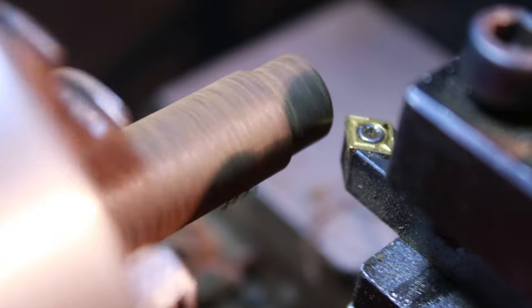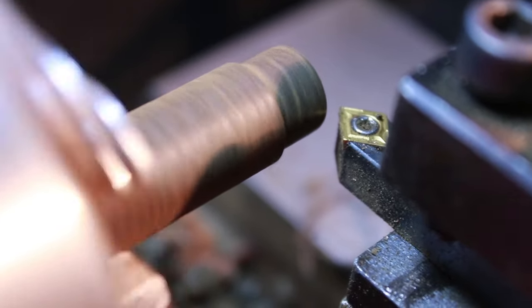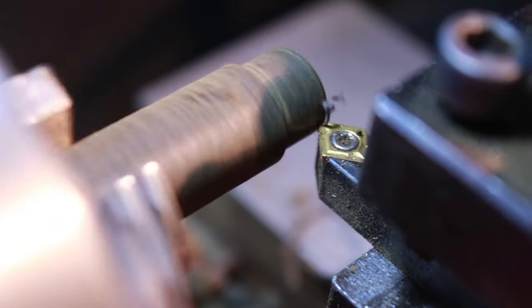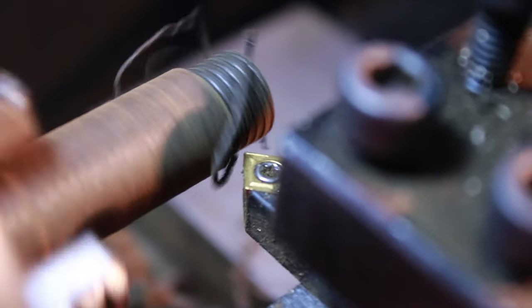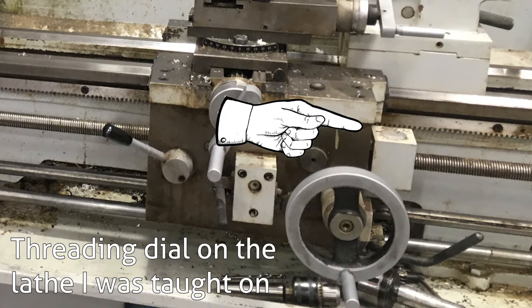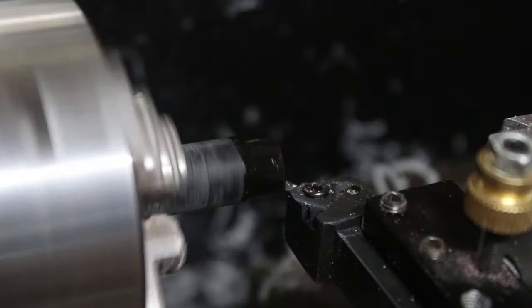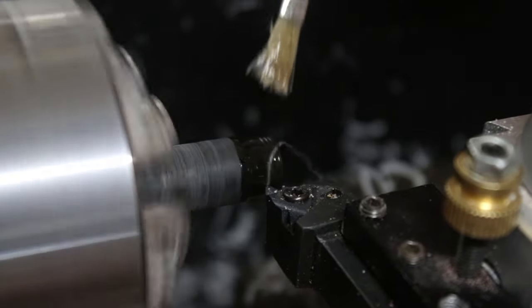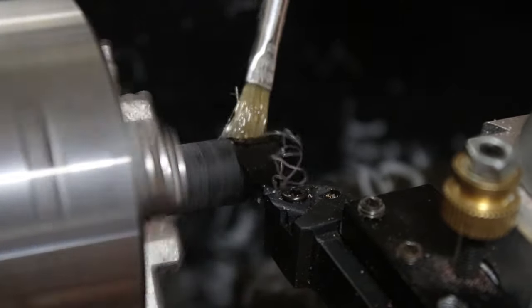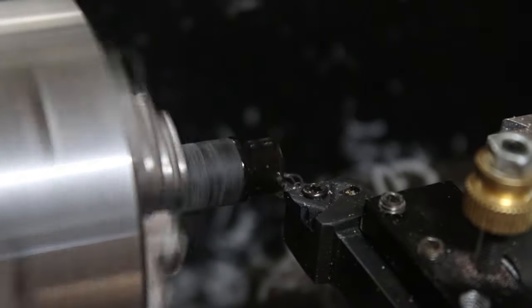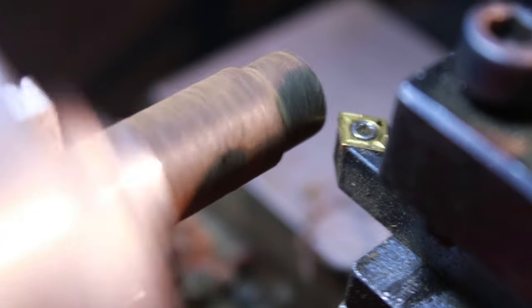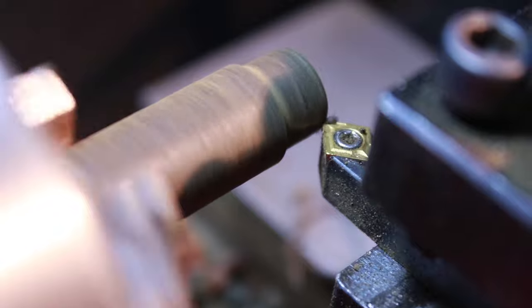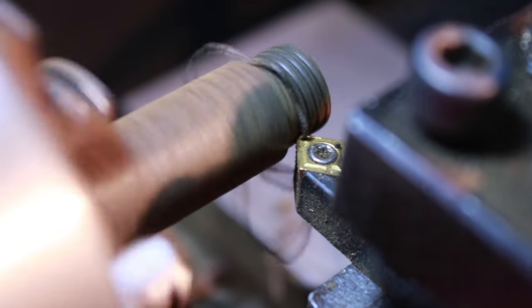And on the same note of threading, many lathes from China will lack the addition of a threading dial, which is essential if you intend to use the lathe for cutting threads. A threading dial attaches to the lead screw so you can engage the half nut at the correct time so that the lathe cuts in the same groove each time. Without this, you'll need to reverse the lathe and keep the half nut engaged to avoid multiple threads being cut. It should be also noted that this doesn't apply for all thread pitches. From memory, when I was cutting 1.5 and 0.5mm pitches, I was able to engage the lead screw at any time.